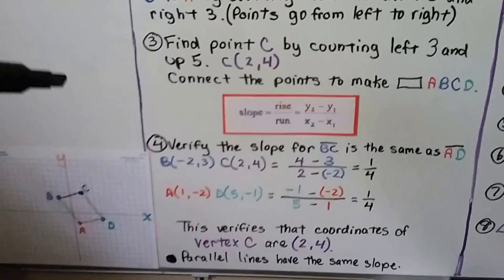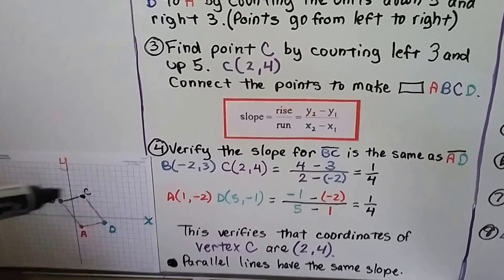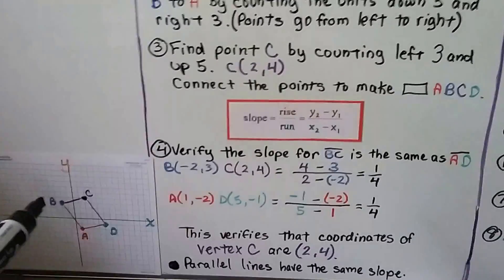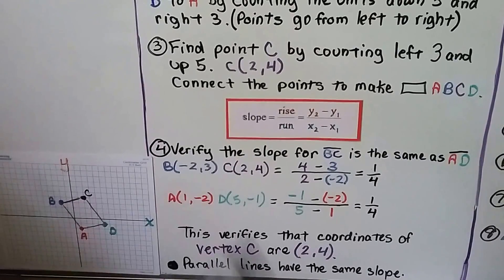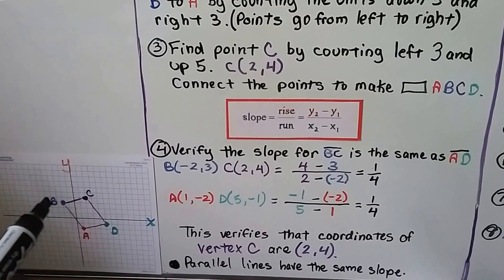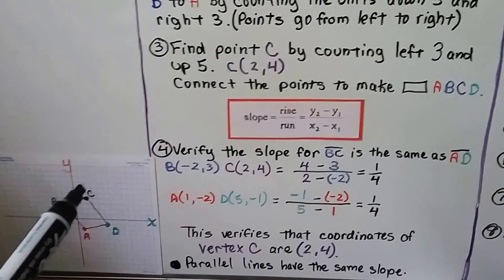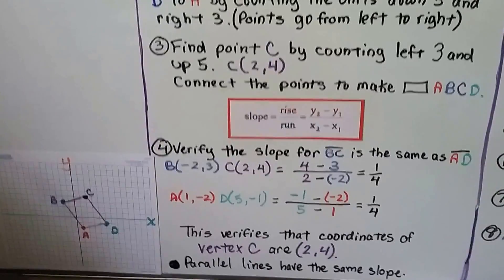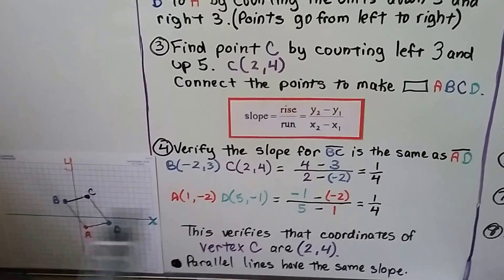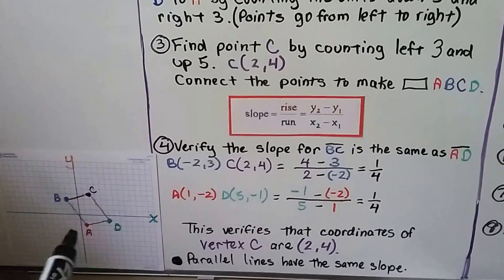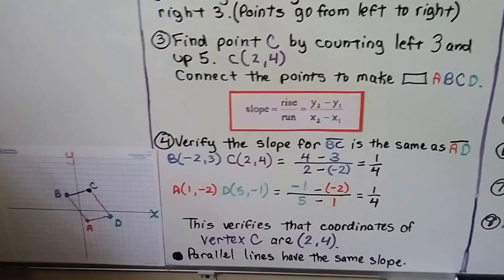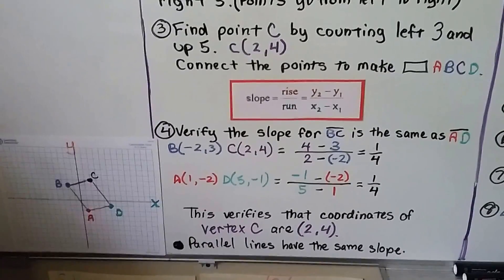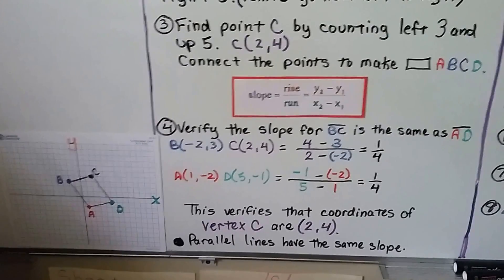And we can verify the slope for BC and AD by using the slope formula. We put in our ordered pairs, and B is farther to the left, so that's x sub 1, y sub 1. That's x sub 2, y sub 2. Same with the A and the D. We put it in the slope formula, and we find that this slope is a positive one-fourth, and this slope is also a positive one-fourth. This verifies the coordinates of vertex C are 2 for x and 4 for y, because parallel lines have the same slope.